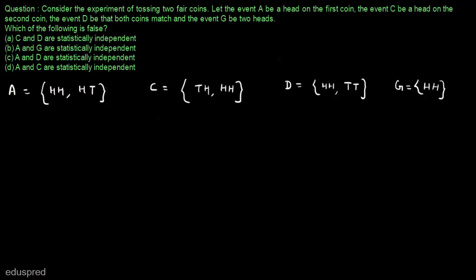Now we have to test which of the following statements is false. Let's understand the meaning of statistically independent. By statistically independent, we mean that the probability of joint occurrence of two events should be equal to the product of their individual probabilities. So if X and Y are two events, then X and Y are statistically independent when P(X ∩ Y) = P(X) × P(Y).